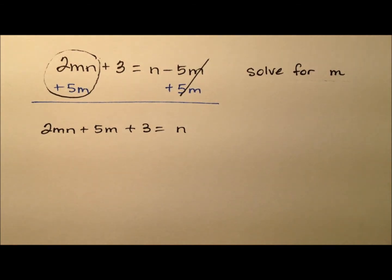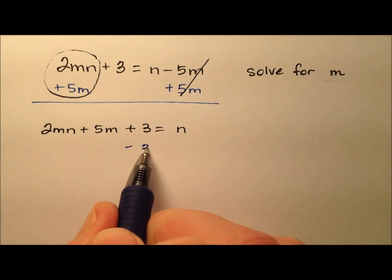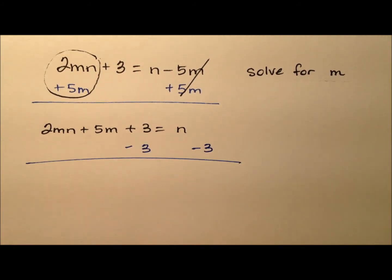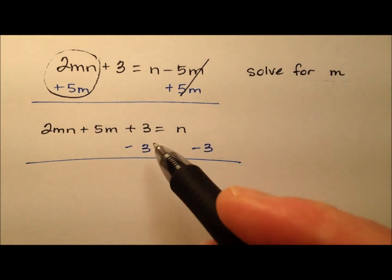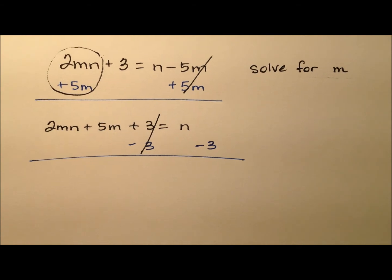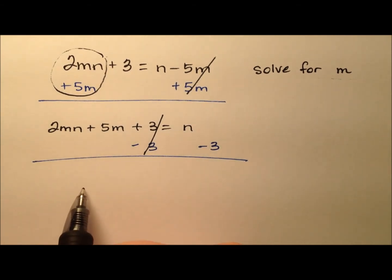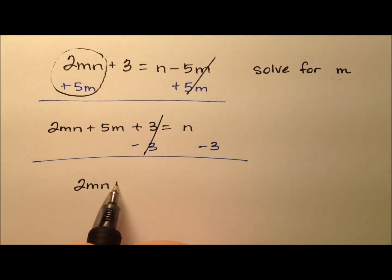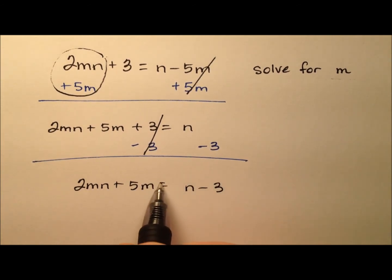And next, we can see that this plus 3 doesn't include an m. So let's go ahead and subtract 3 from both sides to get that 3 off of the left and onto the right. So we see that those will cancel. And so here's what I have, 2mn plus 5m, and that'll equal n minus 3.